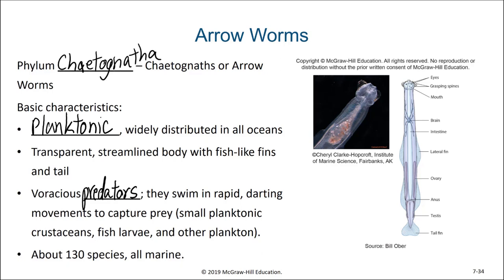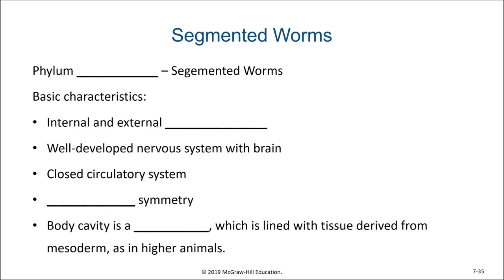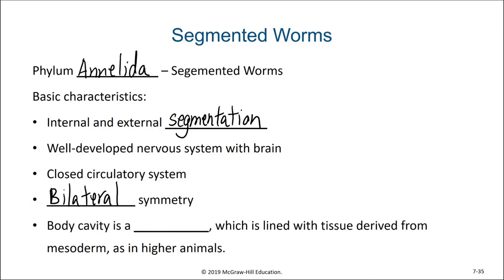The last group of bilaterally symmetrical worms that we'll discuss are the annelids or segmented worms, in phylum Annelida. Their basic characteristics are that they have internal and external body segmentation, a well-developed nervous system and brain, a closed circulatory system, bilateral symmetry, and their body cavity is a true coelom, lined with tissues derived from the mesoderm, as in higher animals.